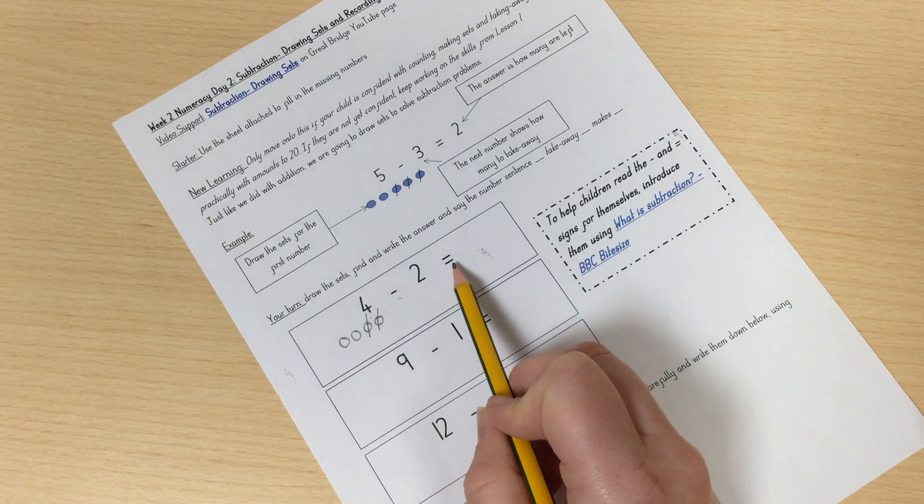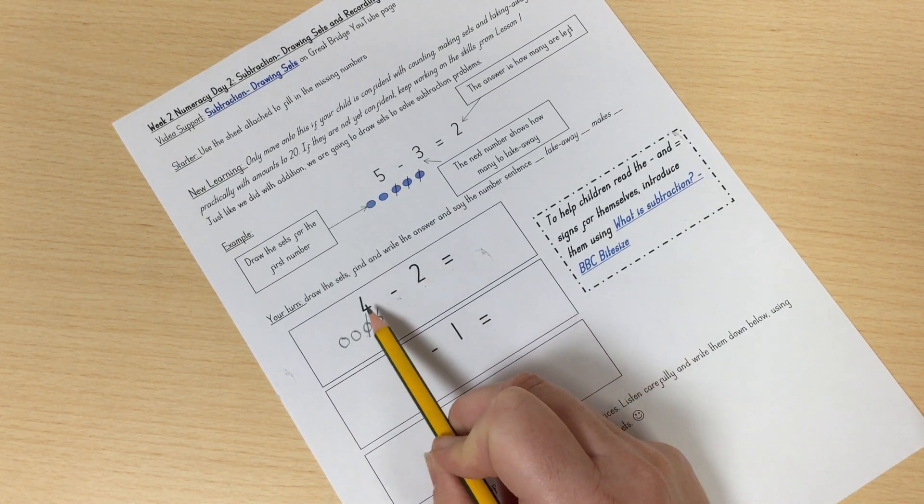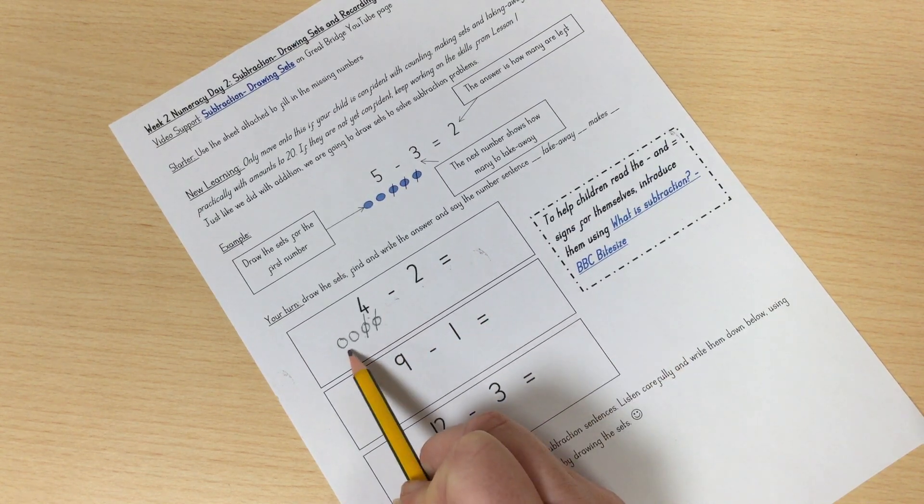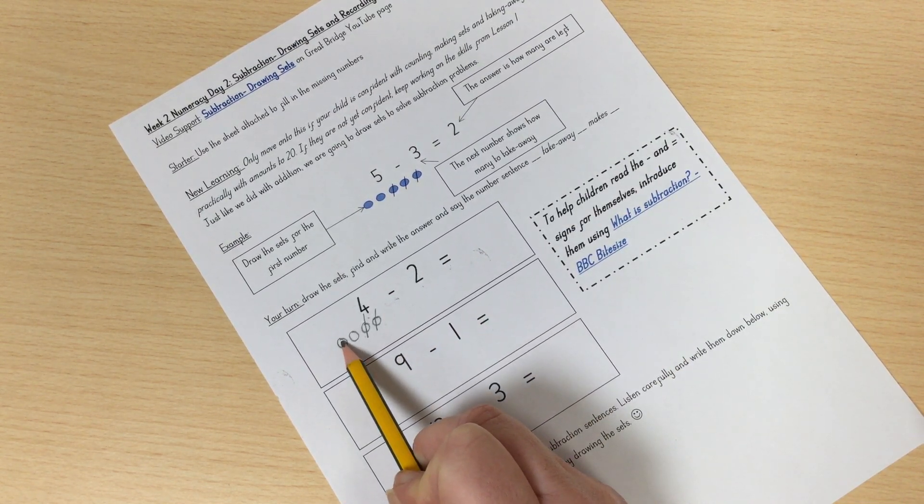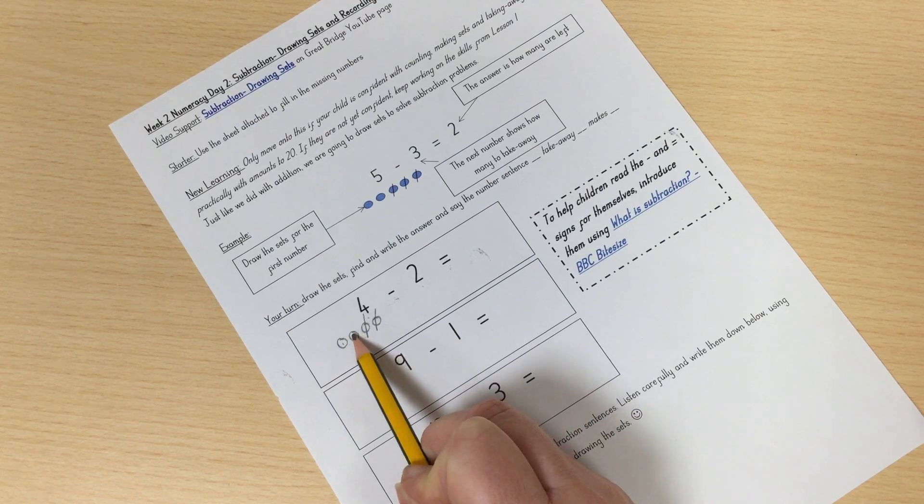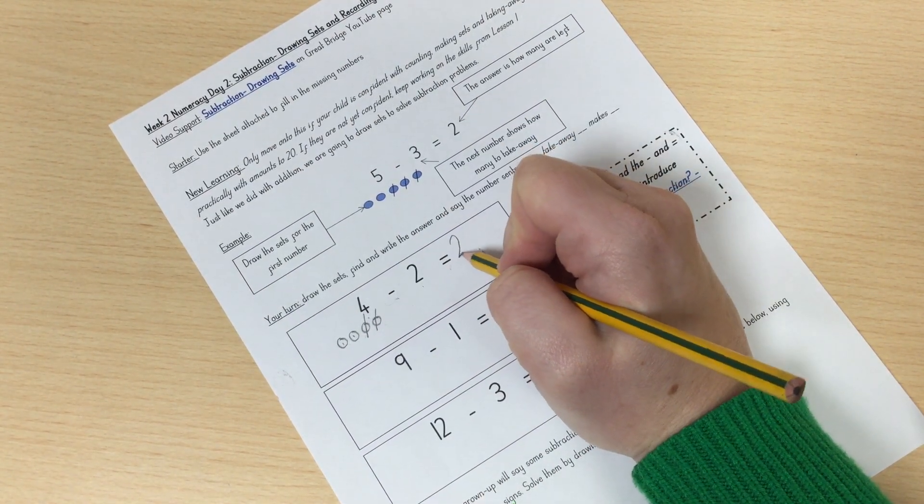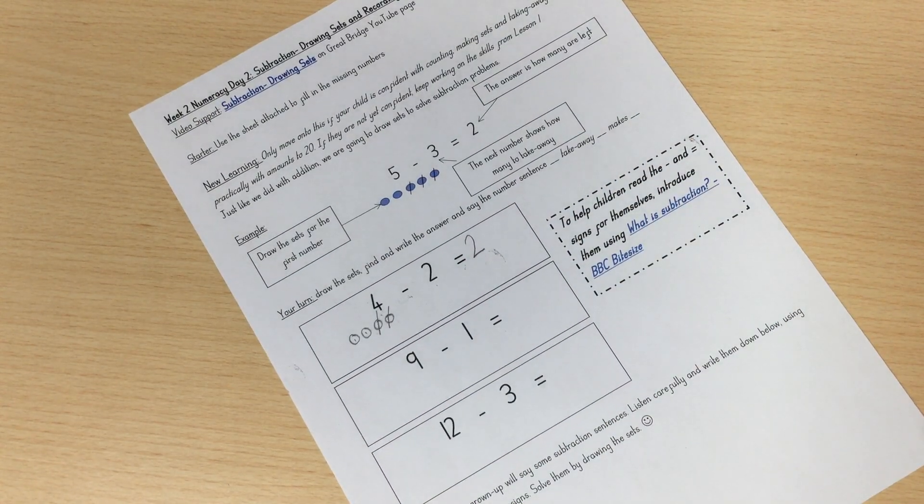So how many are left? Four take away two equals how many? One, two. There are two left. Four take away two equals two.